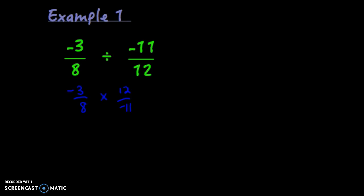We can look for common factors to get rid of and reduce. So 3 and 11 have no common factors other than 1. 12 and 8 both share a common factor of 4. So I'm going to divide 12 and 8 both by 4. 12 divided by 4 is 3, and 8 divided by 4 is 2.